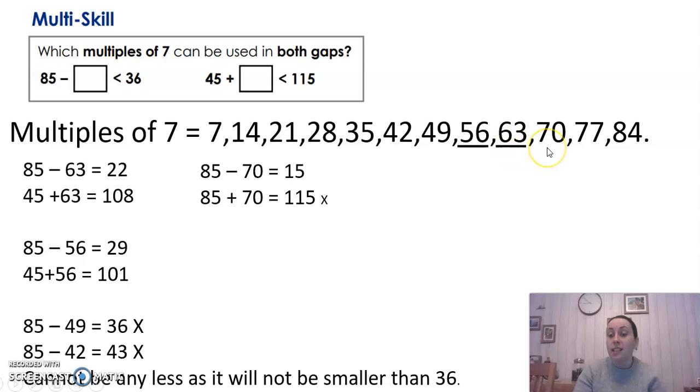So then I checked the multiple 70, just double check if that one would work. 85 take away 70 is 15. 15 is less than 36, so maybe, maybe. Then I did...